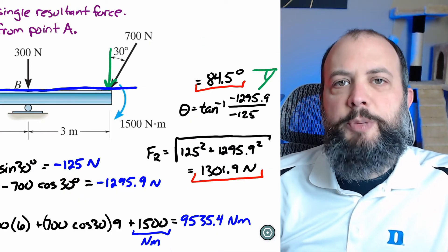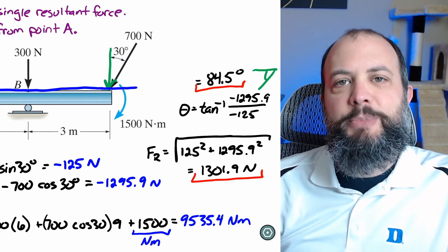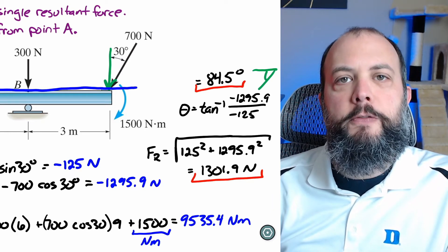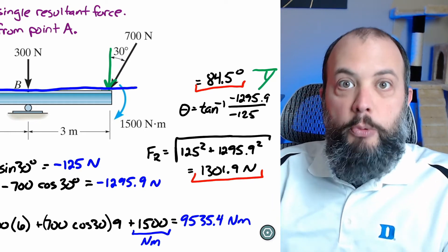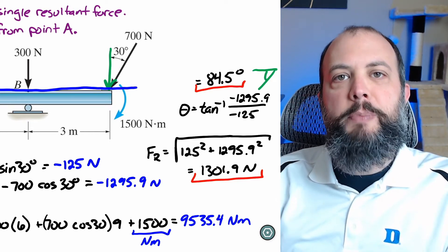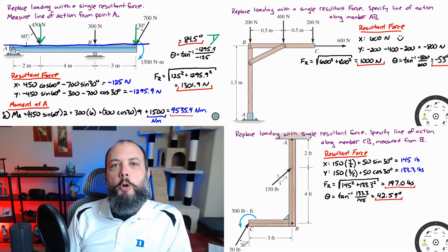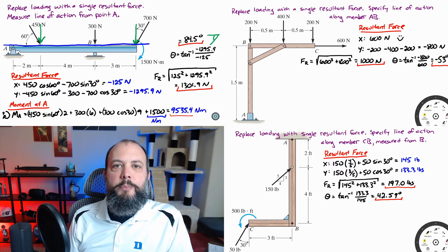The most common mistake a student would make here would be to multiply the 1,500 Newton-meter moment by a distance of 9 meters, just like was done for the 700 Newton force. The key thing to keep in mind is that a moment is already a moment — the 1,500 already has units of Newton-meters and does not need to be multiplied by a distance. So in solving for moments about point A, all of the forces get multiplied by a distance, but the moments are just added as is. Do not multiply them by another distance.